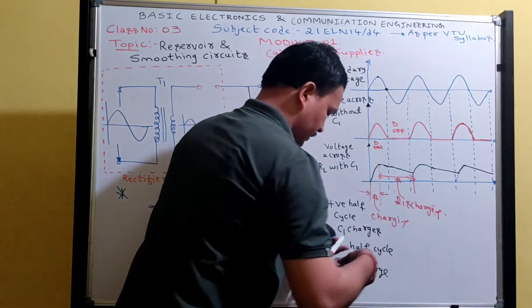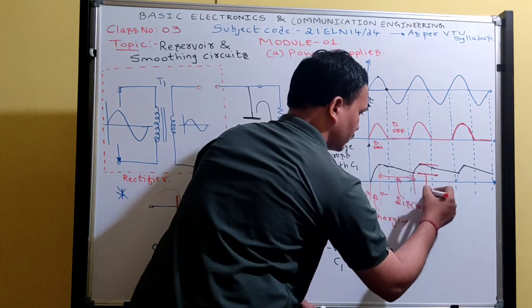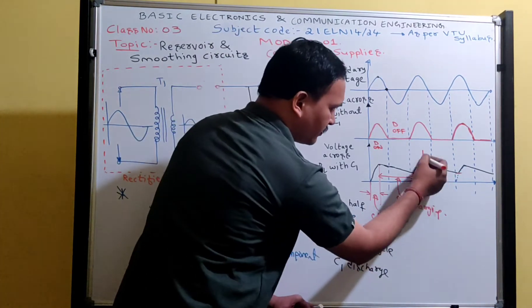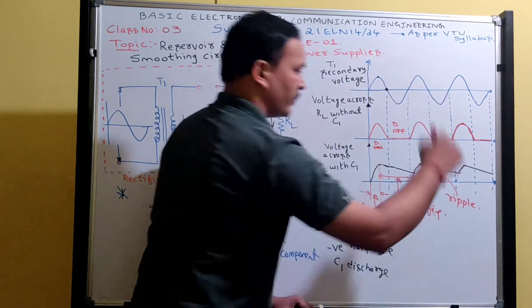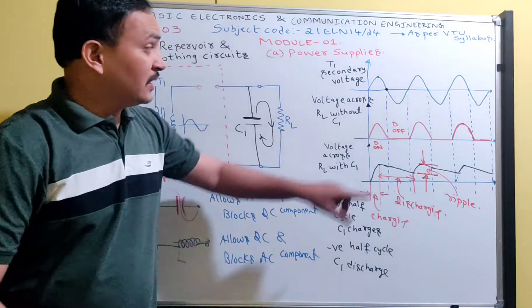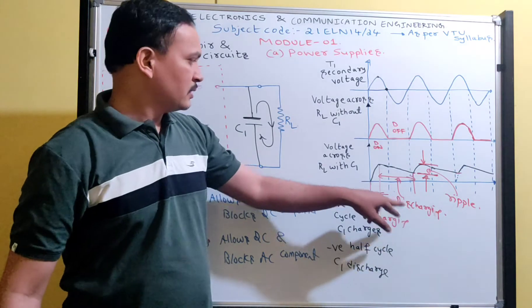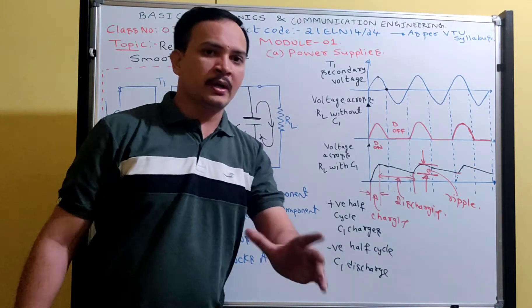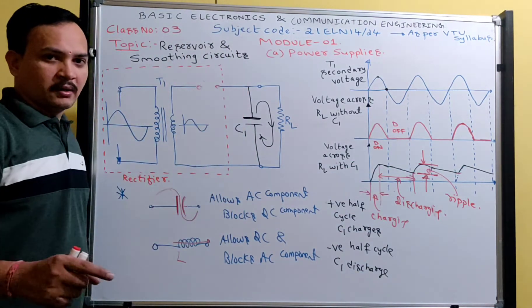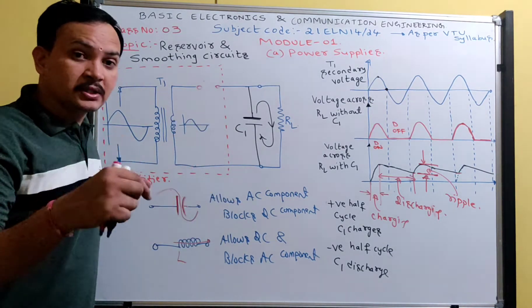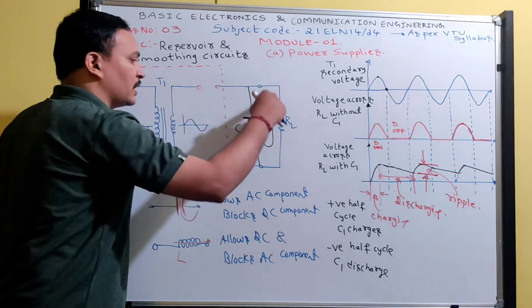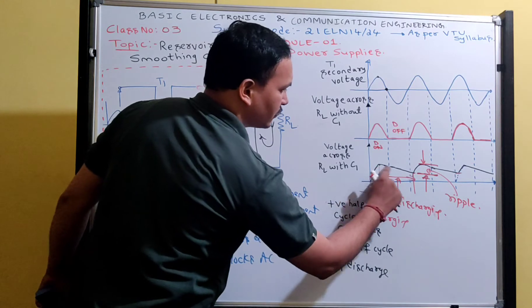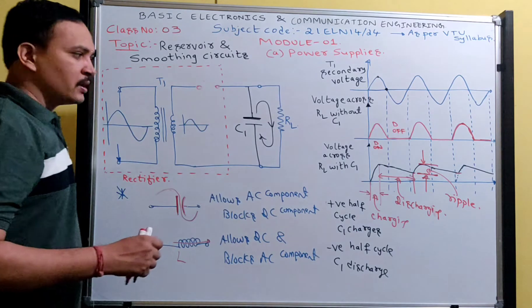The difference between the maximum peak voltage and the lowest discharge point of the capacitor is called the ripple content in the output. There is a lot of ripple in the output, but using a capacitor reduces it slightly. We can further reduce this ripple by increasing the value of the capacitor. If the capacitance increases, the capacitive reactance decreases, so more AC component flows through the capacitor, and the capacitor discharges more slowly — meaning the ripple is reduced.